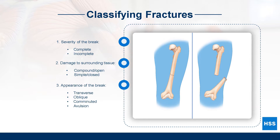A fracture can be complete, meaning that the bone is fully separated into at least two pieces, or incomplete. An incomplete fracture is a partial break that may bend the bone to one side or produce cracks down the middle of the bone. A fracture may cause damage to the muscles or break through the skin at the site of injury — this is known as a compound or open fracture. Simple or closed fractures remain more aligned following a break and do not damage the surrounding tissue.